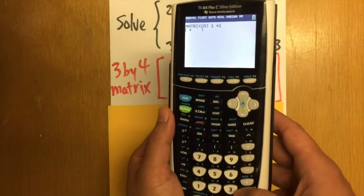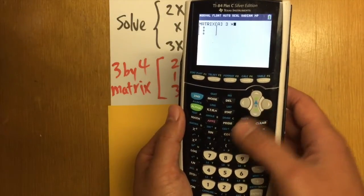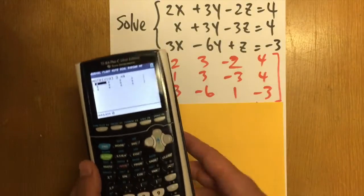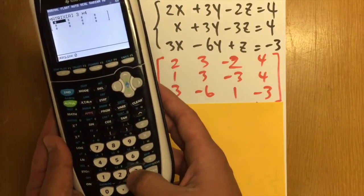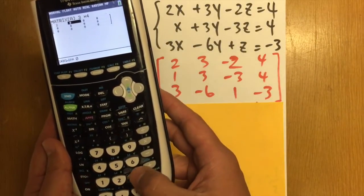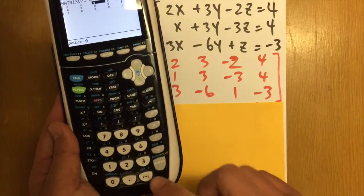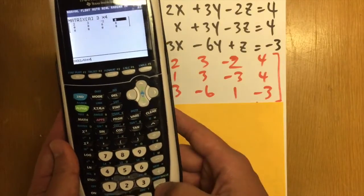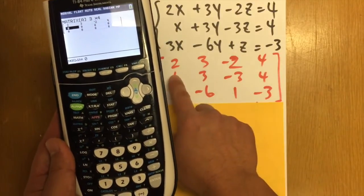First, we are going to make sure we write this down as 3x4. And then we just have to fill in these numbers. So we are just going to do that. So I'm going to put down 2, 3, and use this for negative, negative 2, and then we have 4.